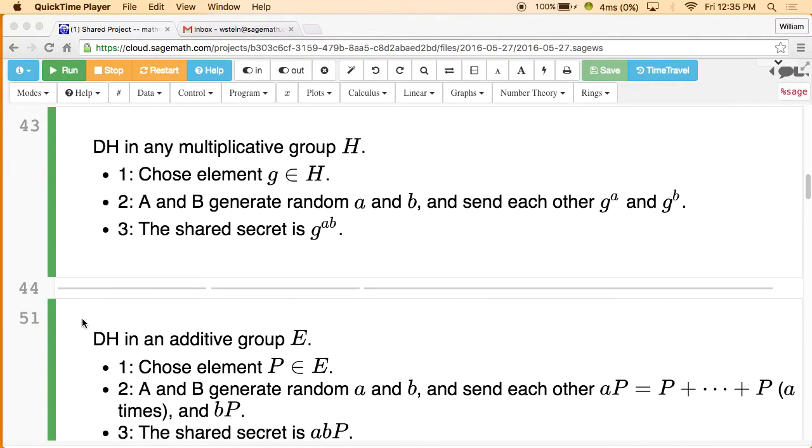Now here's the idea. You can replace H, it doesn't have to be the non-zero numbers modulo p under multiplication. You can use any multiplicative group at all. Just take an element of a multiplicative group, your favorite group like, I don't know, the symmetric group or something, and then choose an element, and then generate two random numbers, raise them to powers, and you get a shared secret. Symmetric group would be really bad because the shared secret would be enormous, but if you can find some group where it just makes sense, you can use it. And there are lots and lots of different possibilities.